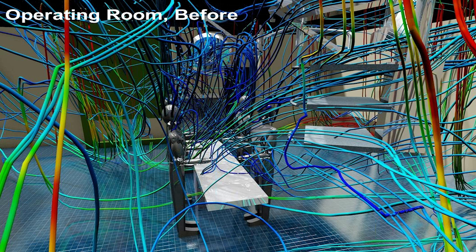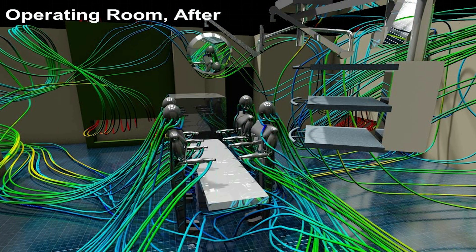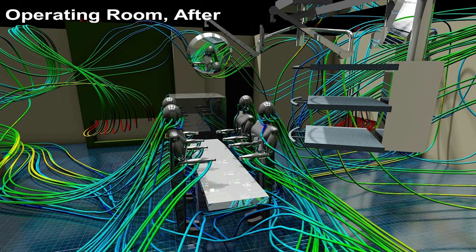After running a couple iterations of the CFD model, tweaking the 3D model, we were able to clean this up and show a much more organized operating room. So in the center of the screen is the operating table and as you can see all of the ventilation is going away from that table and none of the contaminants would be recirculated back onto the patient so that we can minimize the risk of infections post-surgery.